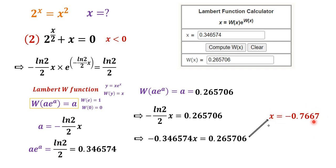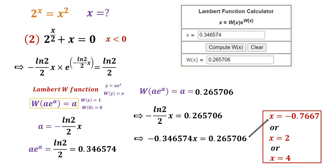So we have the negative root x ≈ −0.7667, and the two positive roots x = 2 and x = 4. We have found all three roots of the original equation 2^x = x². That brings us to the end of this video — thanks for watching. Please subscribe for more videos and I'll see you in the next one.